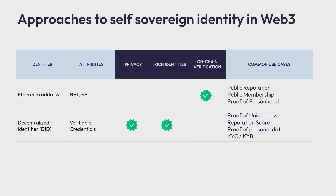There are challenges with this approach. First is privacy — how much information are we willing to put publicly on an NFT? That limits the richness of identities we can create. If we cross the line to more private things like biometrics, proof of uniqueness, reputation scores, privacy concerns start to appear. When we need to use identity for higher-value scenarios or scenarios requiring higher trust, we need to go for the other approach: decentralized identifiers and verifiable credentials.